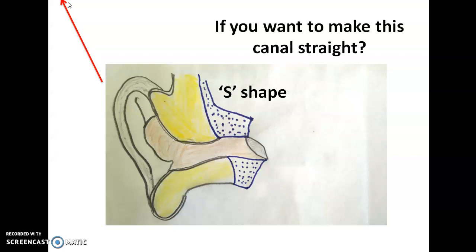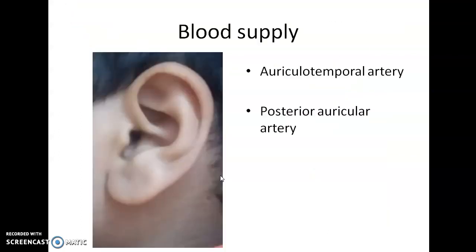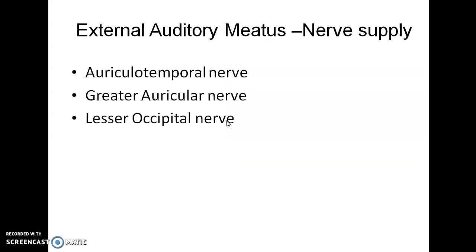We have to pull the pinna upwards and backwards. The blood supply of the external auditory canal is by an artery here in the front, auriculotemporal artery, and one artery behind the pinna called posterior auricular artery.